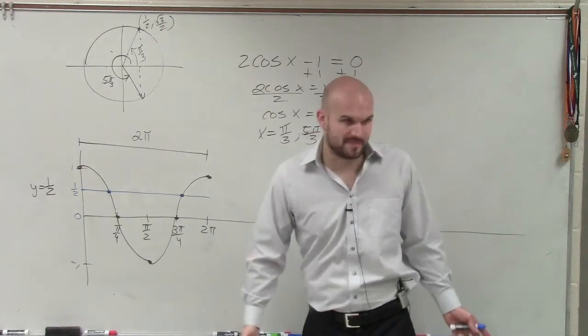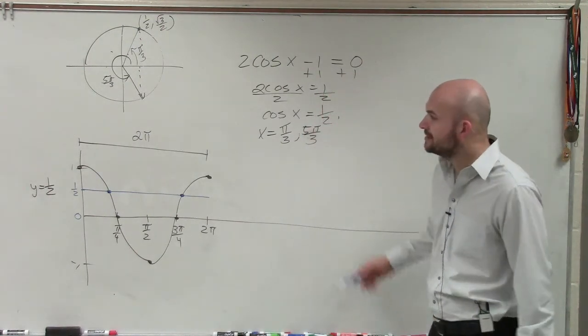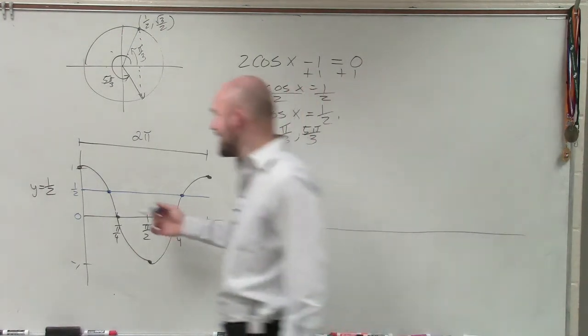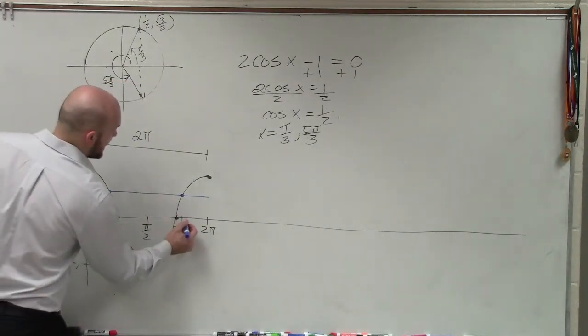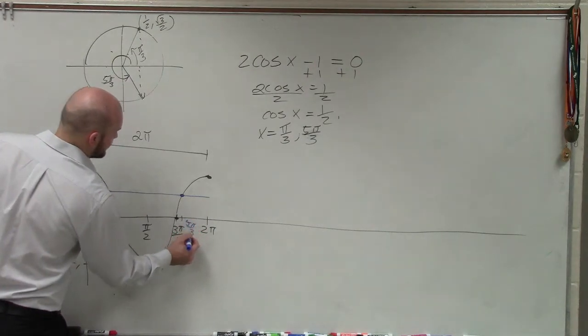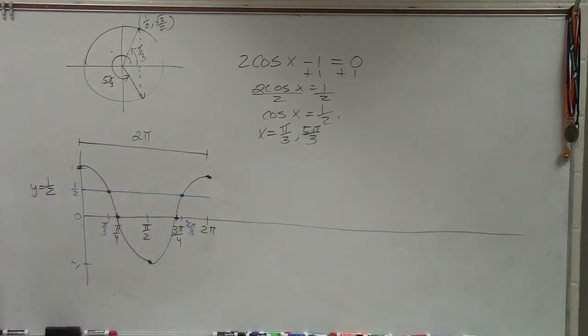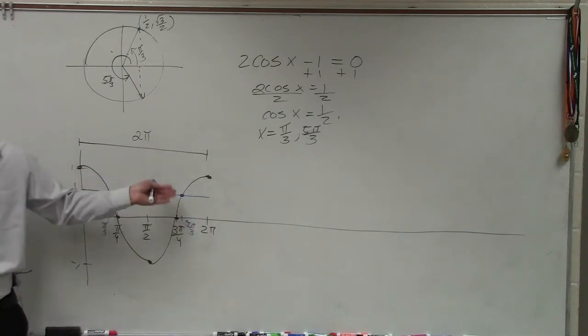So what we notice is that this intersection happens twice. Right? Now, I know my graph might not be the best in the world, but that intersection happens at pi over 3 and at 5 pi over 3. So if you were to look at this, that's the exact same thing as our solutions. That's where our cosine works.